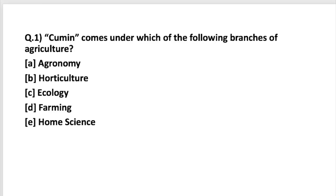Cumin comes under which of the following branches of agriculture? First we need to identify that cumin falls under the category of spices, so spices is the subcategory. There are 7 major branches of agriculture: agronomy, horticulture, forestry, animal husbandry, fishery science, agriculture engineering, and home science. These are the 7 branches, and there is a particular categorization under which spices fall.